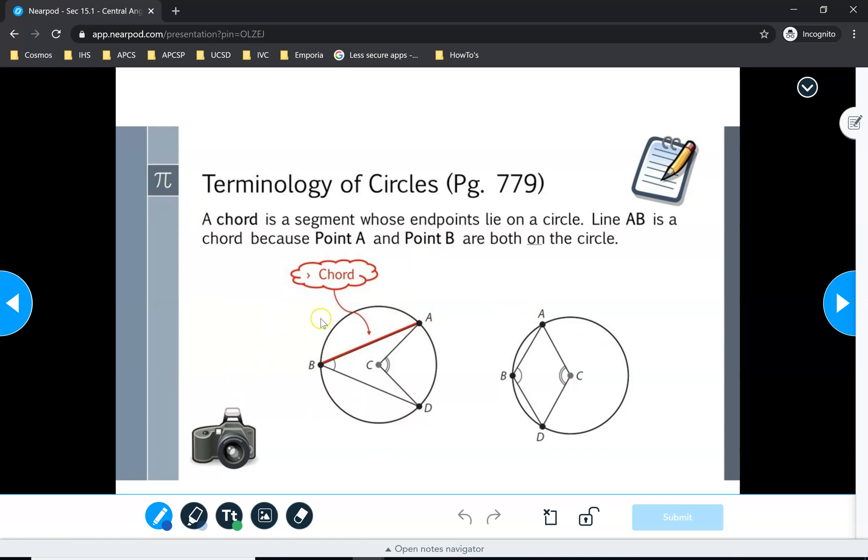This all has to do with understanding what a chord is. A chord is just a line that goes from one end of the circle, so like from point B all the way to another end that is also on the circle, point A. And so that's a chord. It's a line that goes across the circle, and that's all I want you to take out of this.